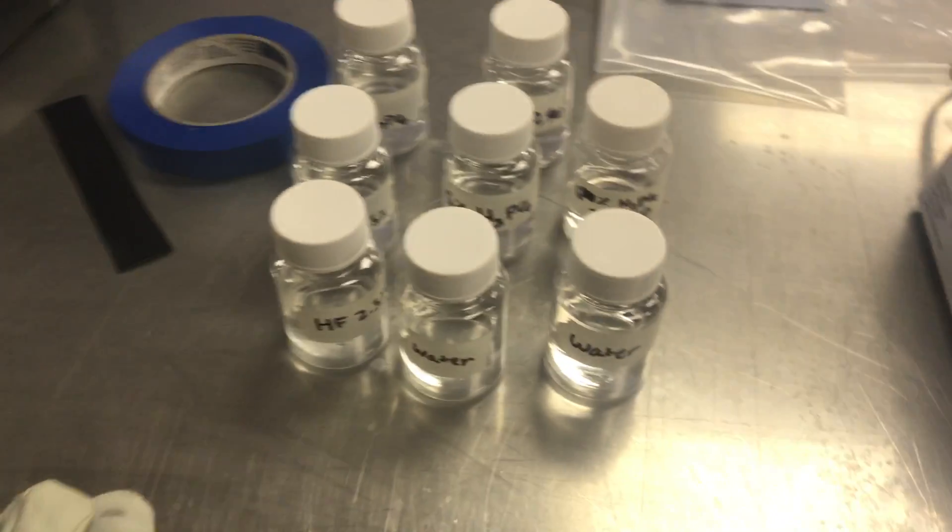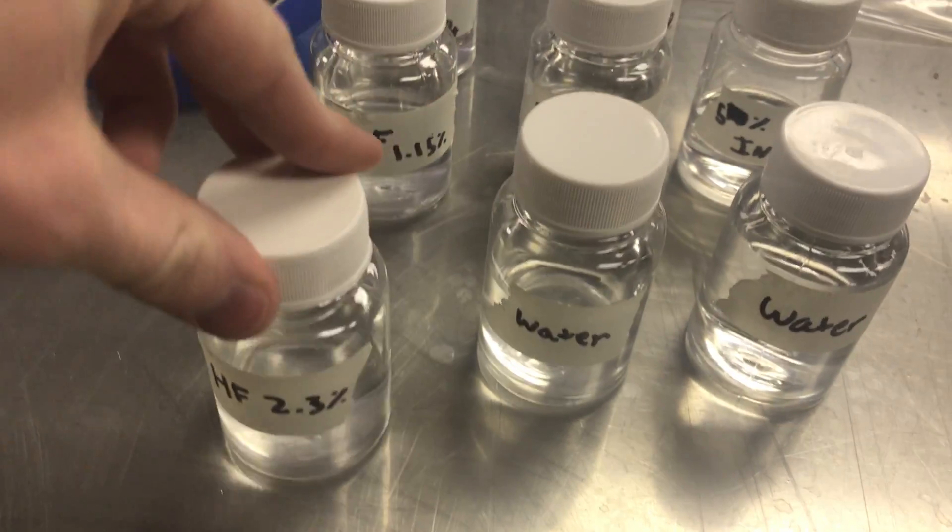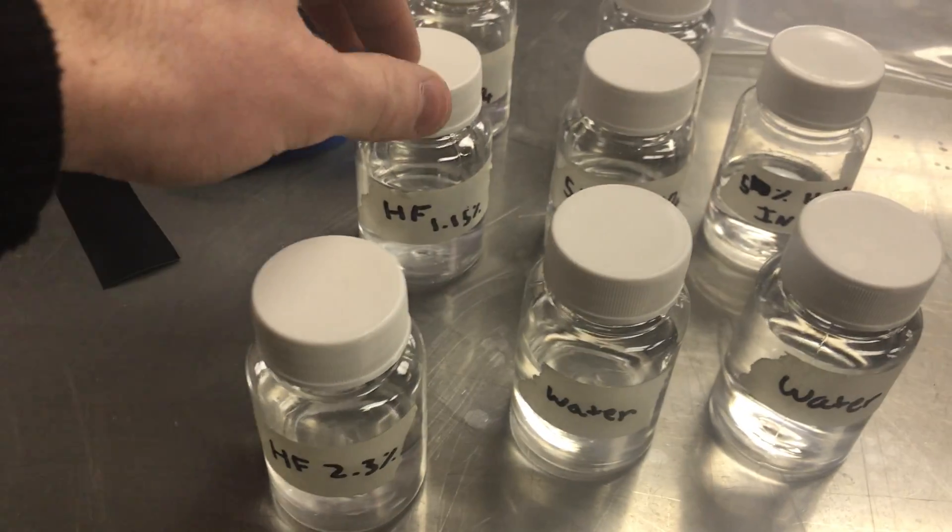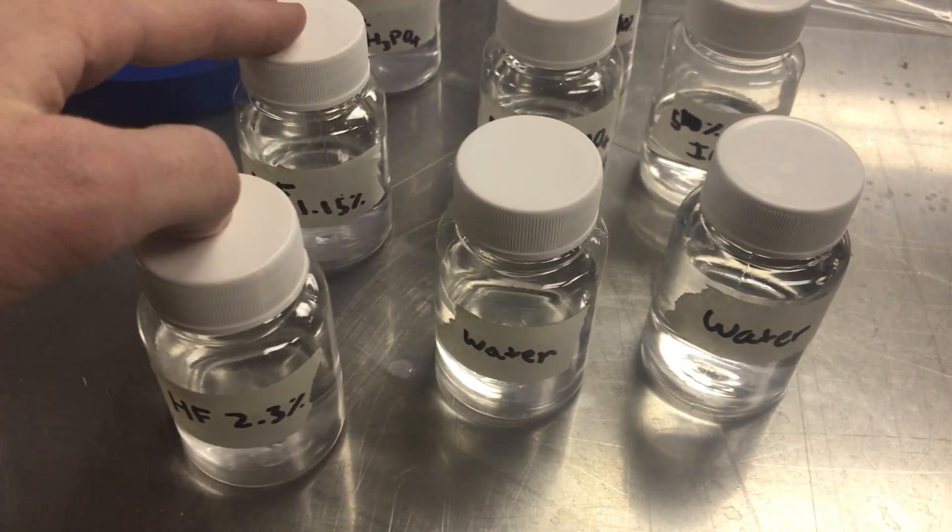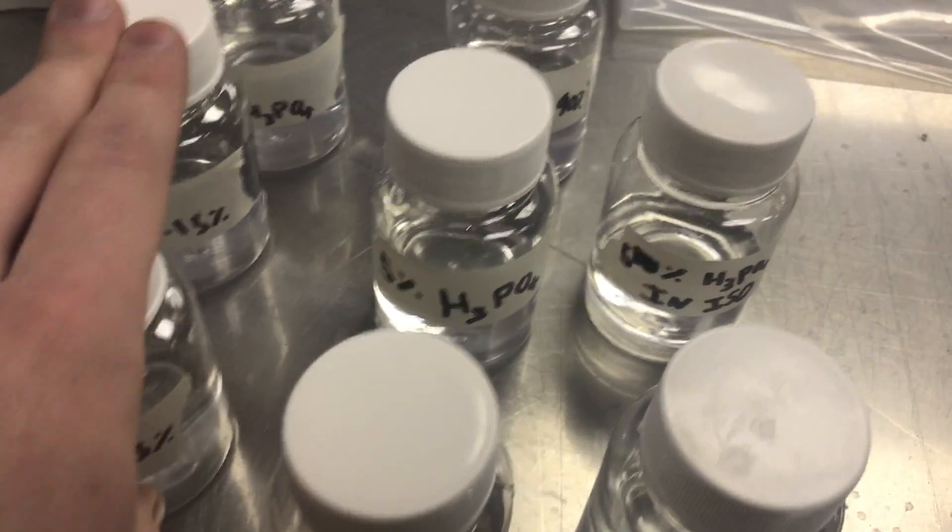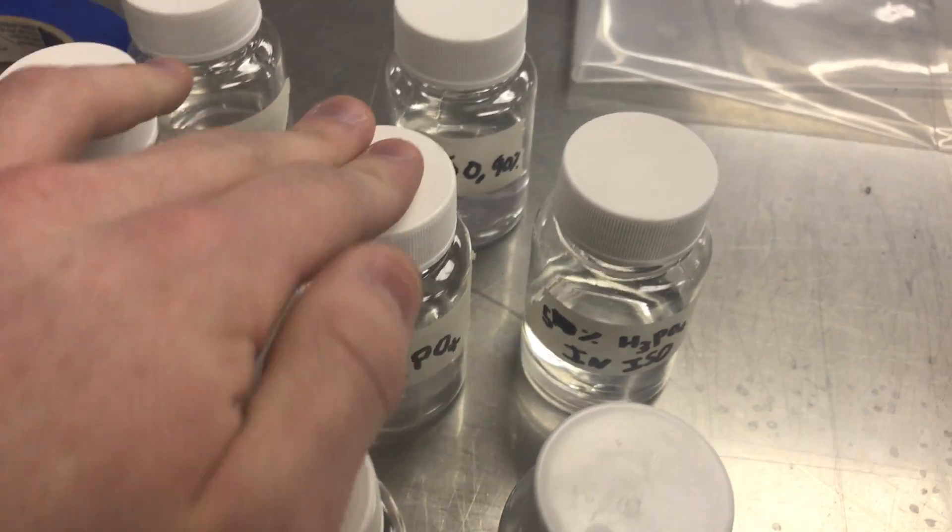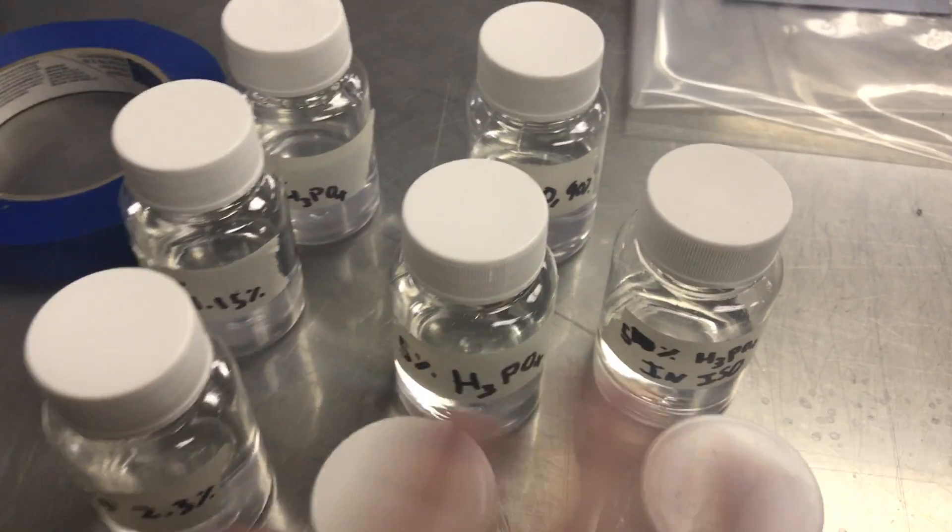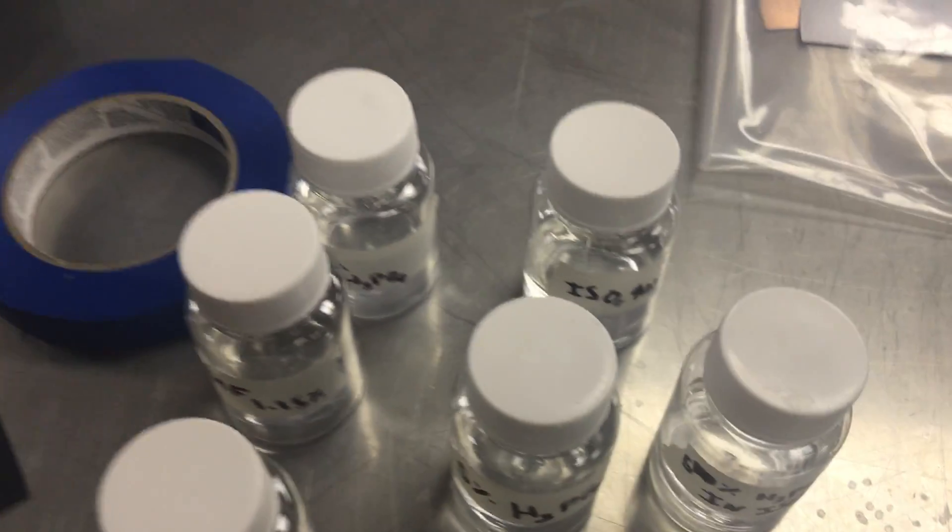These are some of the chemicals I used during the process. This is hydrofluoric acid 2.3% and about 1% hydrofluoric acid using that for etching silicon dioxide. Two DI water baths and then some dopants, phosphoric acid solutions and isopropyl alcohol and water. Things like that.